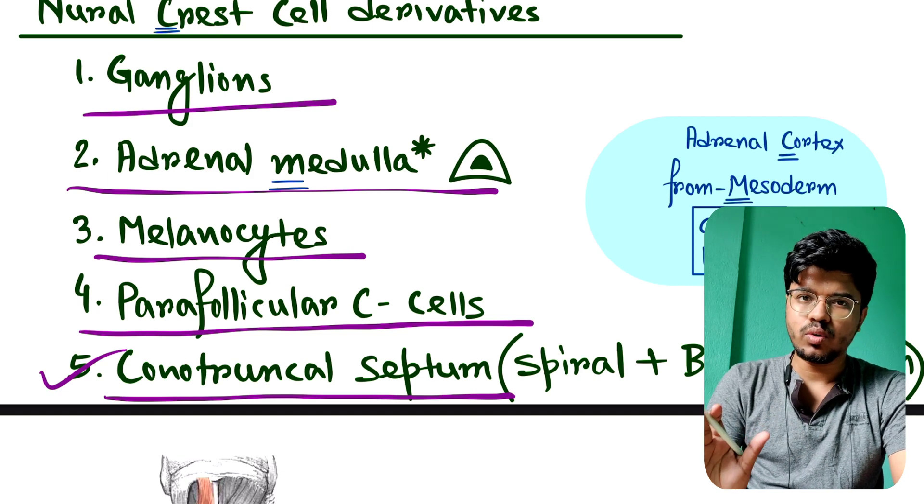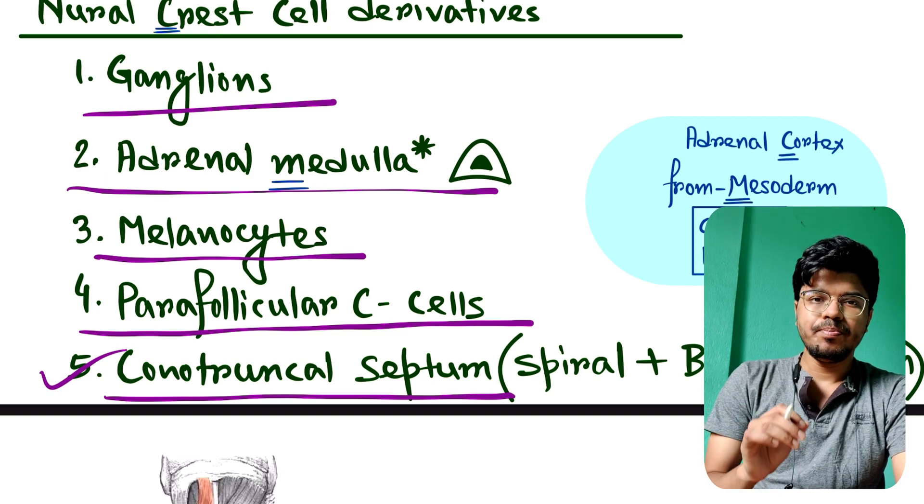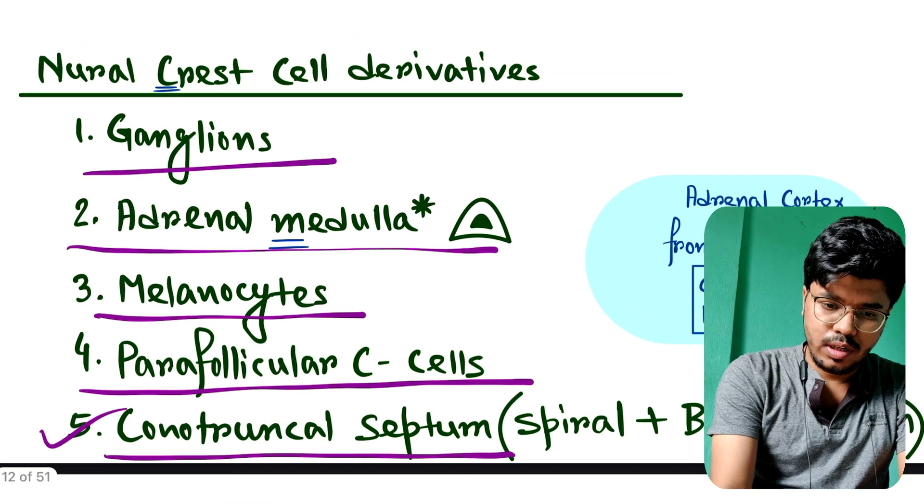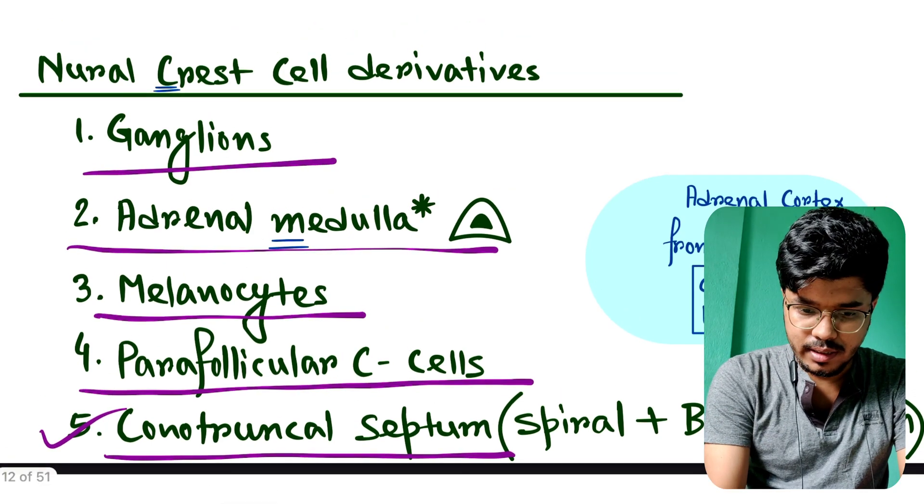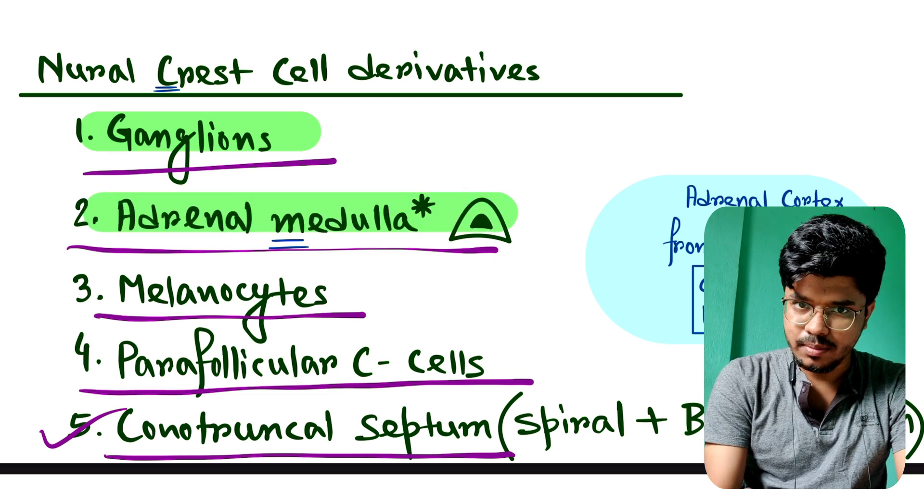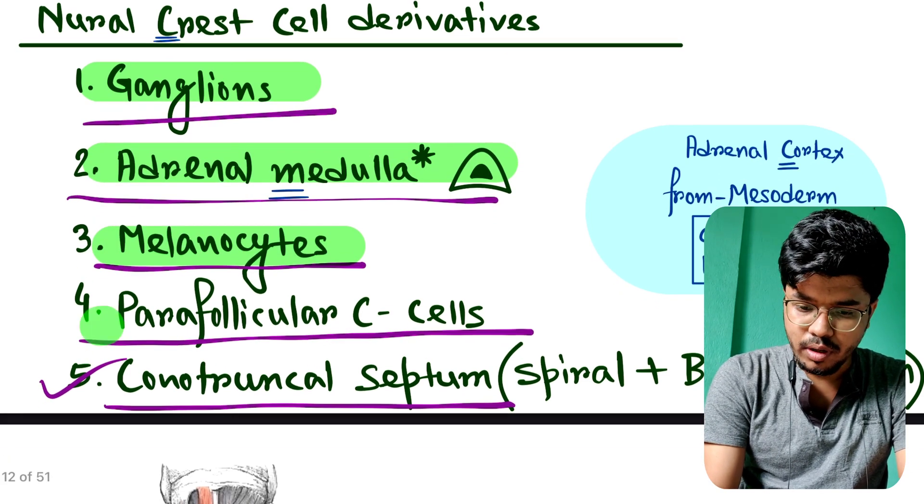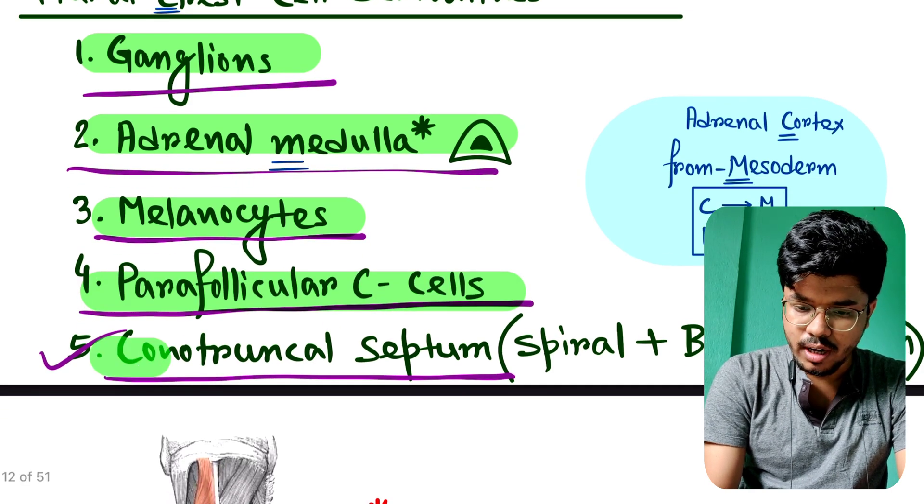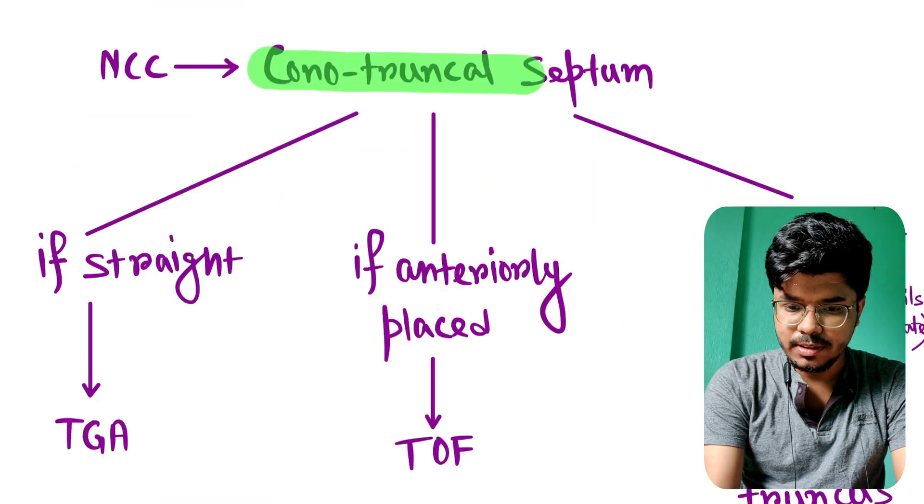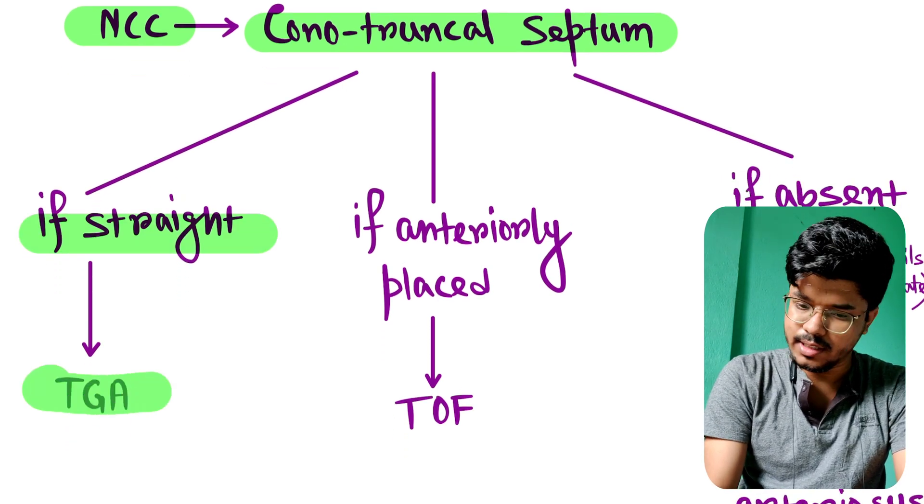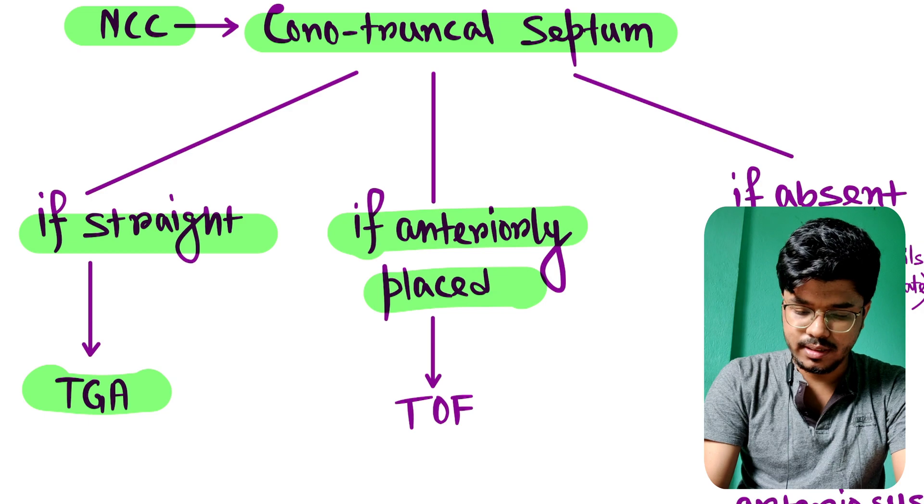So, neural crest cell derivatives are ganglions, adrenal medulla, melanocytes, parafollicular C cell, and conotruncal septum. Conotruncal septum is derived from neural crest cell. If it's straight, then TGA. If anteriorly placed, then TOF. If absent, then patent truncus arteriosus.